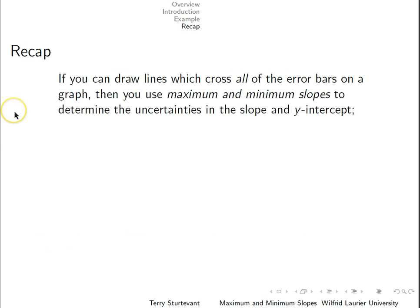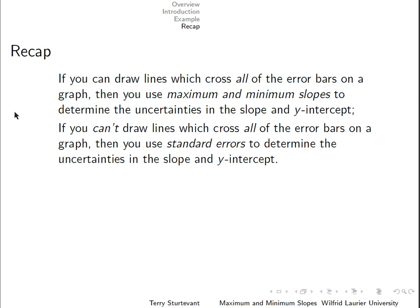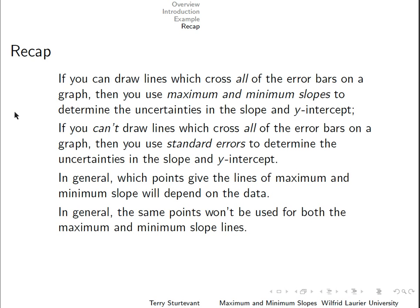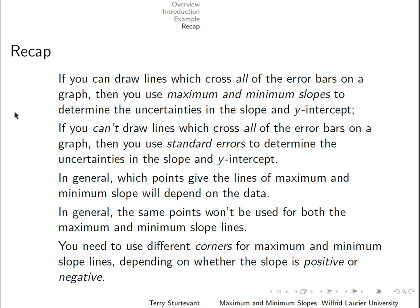If you can draw a line which crosses all of the error bars on a graph, then you can use maximum-minimum slopes to determine the uncertainties in the slope and the y-intercept. If you can't draw lines that cross all of the error bars, then you have to use standard errors. In general, which points you use to get the lines of maximum-minimum slope will depend on the data, and the same points won't be used for both the line of maximum slope and the line of minimum slope.